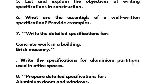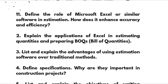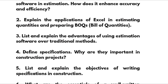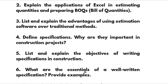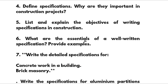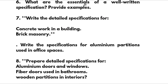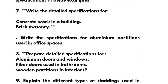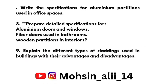Module 3 theoretical portions: define the role of Microsoft Excel or similar software in estimation — how does it enhance accuracy and efficiency? Explain applications of Excel in estimating quantities and preparing bills of quantities. List advantages of estimation software over traditional methods. Define specifications and their importance in construction projects. Explain objectives of writing specifications, essentials of a well-written specification, and write detailed specifications for concrete work, brick masonry, aluminium partitions, aluminium doors and windows, fiber doors used in bathrooms, wooden partitions, and explain different types of claddings with advantages and disadvantages.